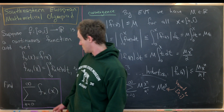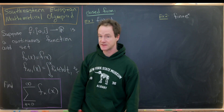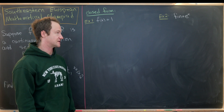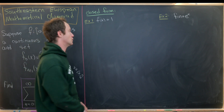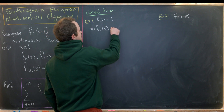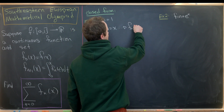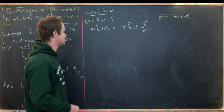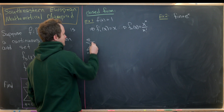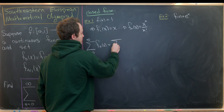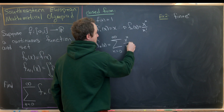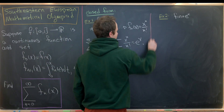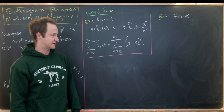Now let's see if we can get a closed form. Let's start with the simplest example: f(x) = 1. Then f₁(x) = x, and more generally f_n(x) = xⁿ/n!, since we're essentially just taking the antiderivative n times. So our sum from n=0 to infinity of f_n(x) equals the sum of xⁿ/n!, which is exactly eˣ. This special case was likely a major motivation for writing this problem.